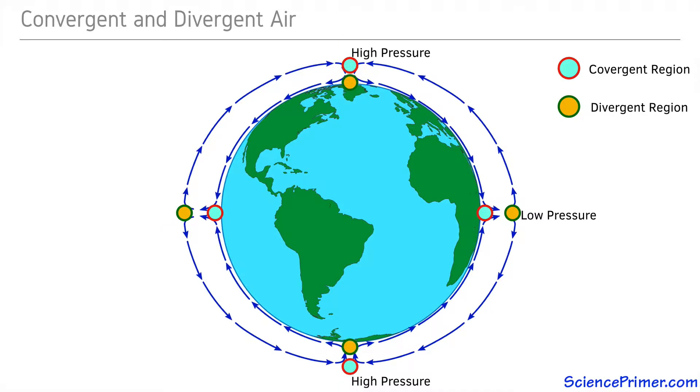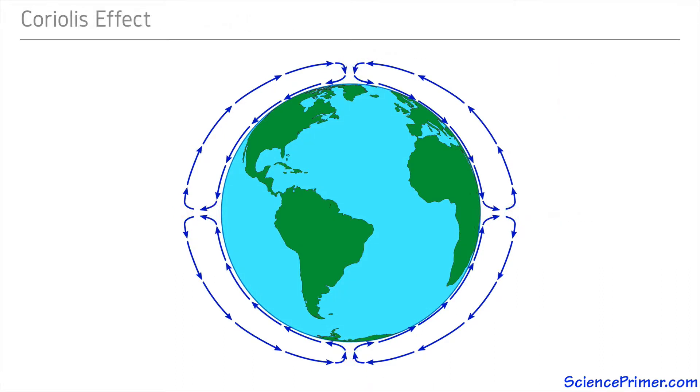Of course, the Earth spins, so these air movements are influenced by the Coriolis effect causing air moving away from the equator to curve to the right in the northern hemisphere and to the left in the southern hemisphere. This change in direction prevents the convection cells from spanning the entire hemisphere.